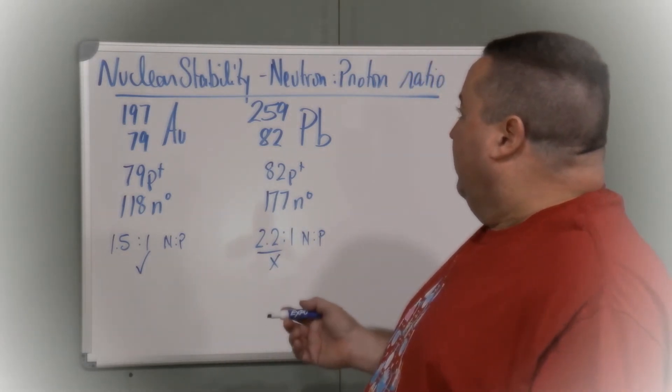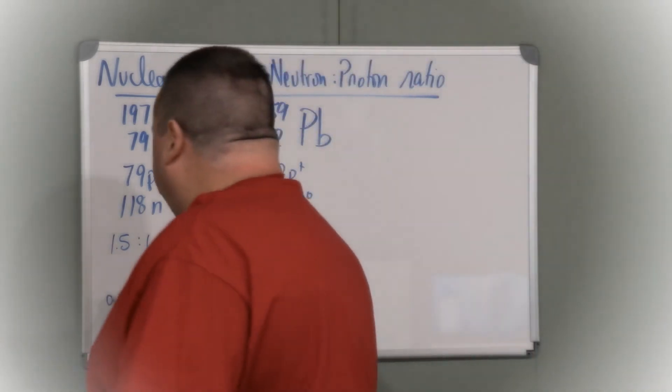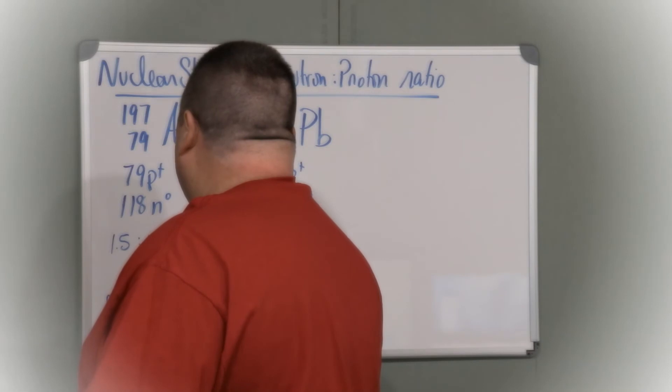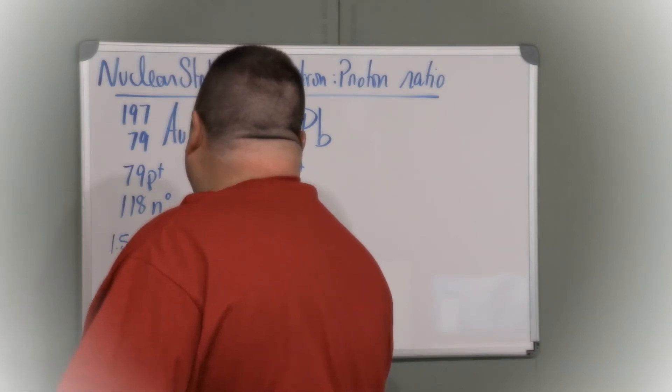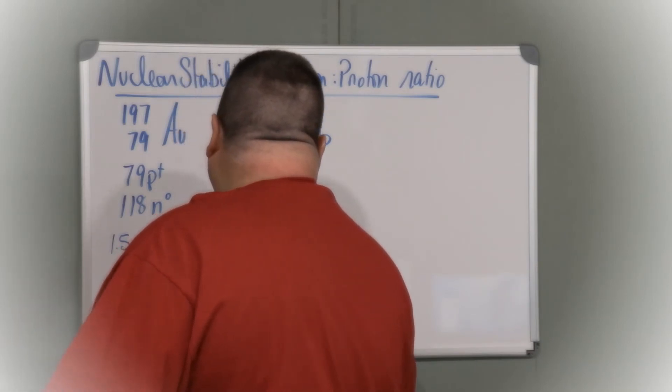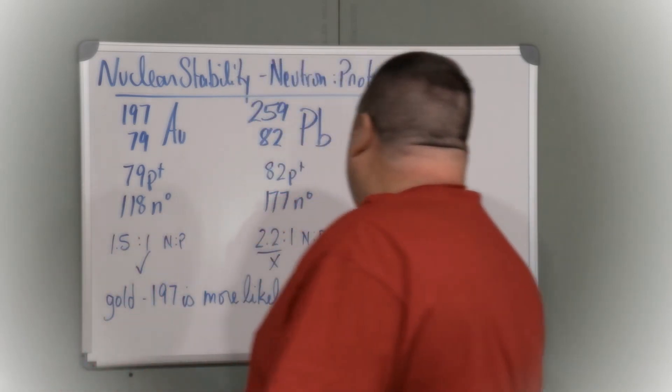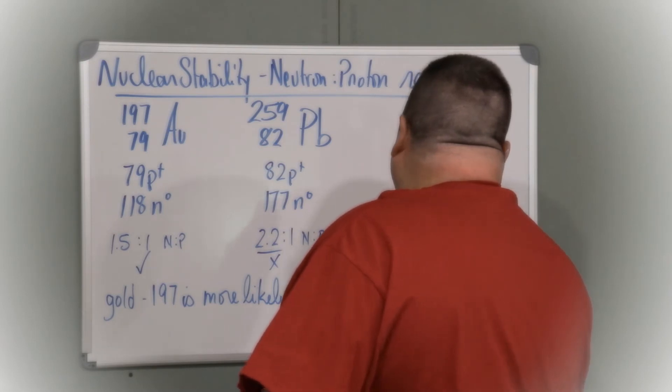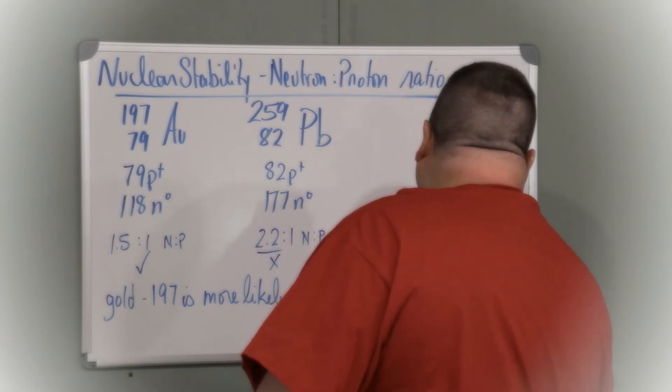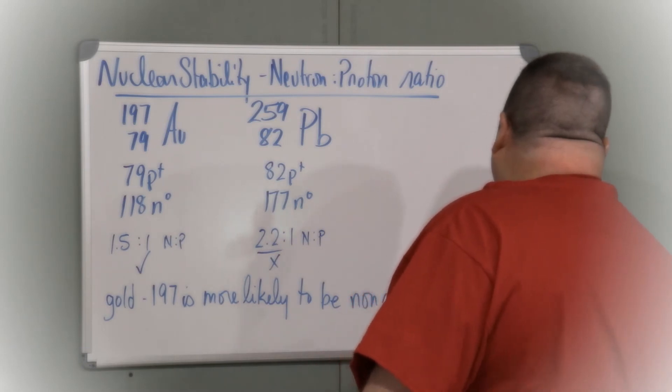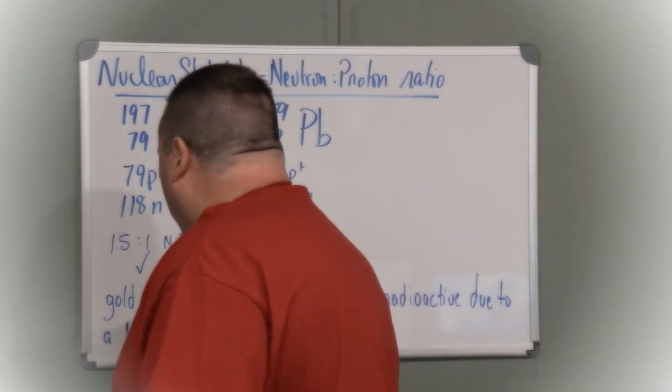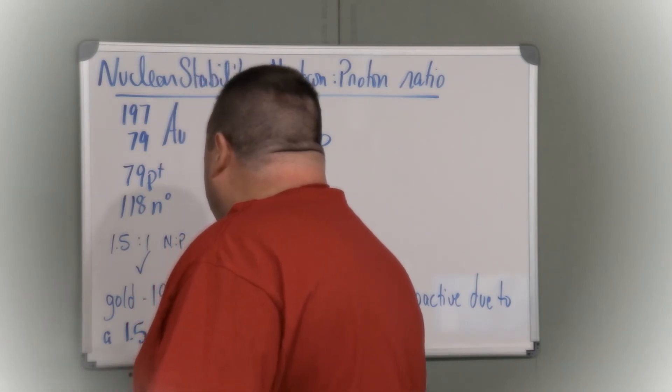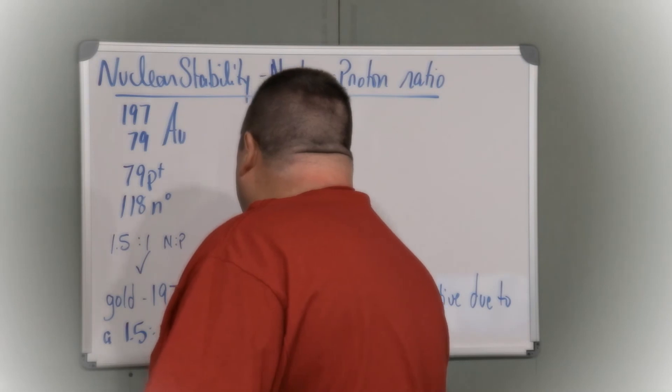So gold 197 is more likely to be non-radioactive due to a 1.5 to 1 neutron to proton ratio.